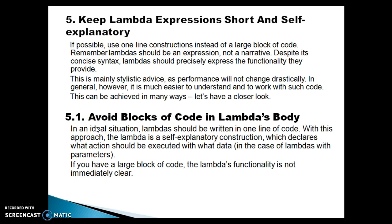First point: avoid blocks of code in lambda's body. In an ideal situation, lambda should be written in one line of code. With this approach, the lambda is a self-explanatory construction which declares what action should be executed with what data. If you have a large block of code, lambda's functionality is not immediately clear.